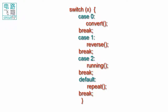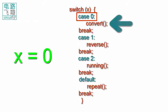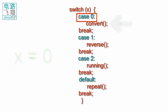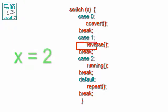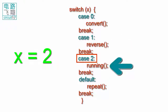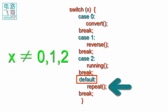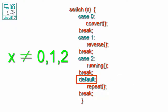In this example, if x is equal to 0, the convert function is run. If x is equal to 1, the reverse function is run. If x is equal to 2, the running function is run. Any other value of x will run the repeat function in the default segment.